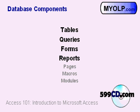Now, database components. Microsoft Access specifically has seven different major database components: tables, queries, forms, reports, pages, macros, and modules. The first four — tables, queries, forms, and reports — are what we're going to work with today. The other three — pages, macros, and modules — are a little more advanced and we're going to save those for a future class.